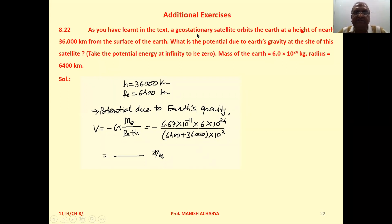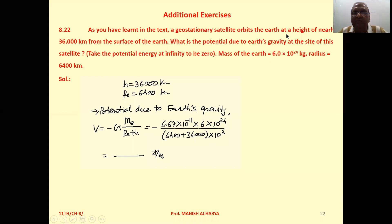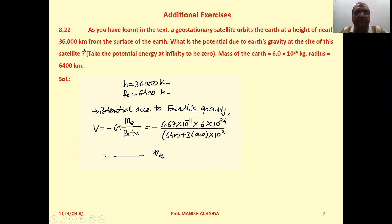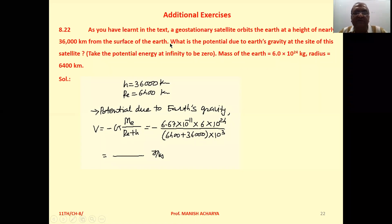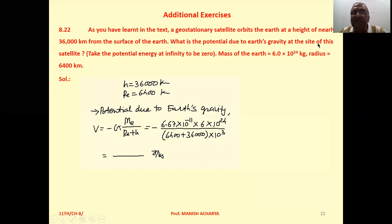As you have learnt in the text, a geostationary satellite orbits the Earth at a height of nearly 36,000 km from the surface of the Earth. What is the potential due to Earth's gravity at the site of this satellite? Take the potential energy at infinity to be zero.